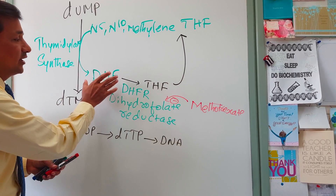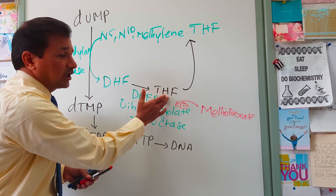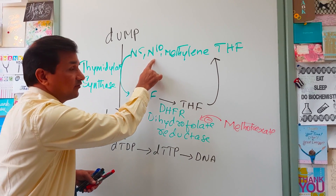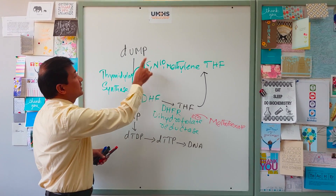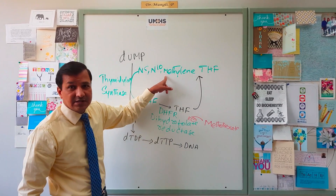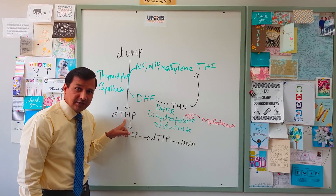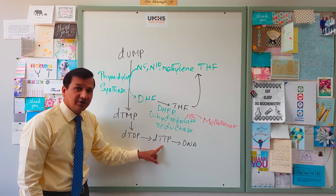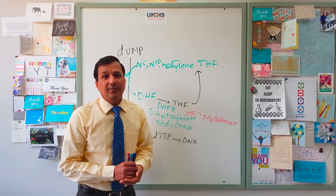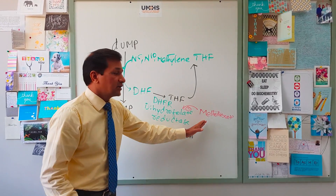Methotrexate inhibits dihydrofolate reductase enzyme, meaning it does not allow conversion of dihydrofolate into tetrahydrofolate. Without sufficient tetrahydrofolate, you cannot make enough N5,N10-methylene tetrahydrofolate, causing a shortage of the coenzyme. As a result, thymidylate synthase activity decreases because the necessary coenzyme is not available, so conversion of dUMP into dTMP decreases. Less dTTP is produced, DNA synthesis is affected, and replication of tumor cells decreases — this is the mechanism of methotrexate.